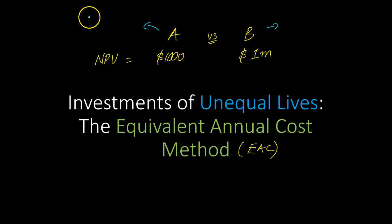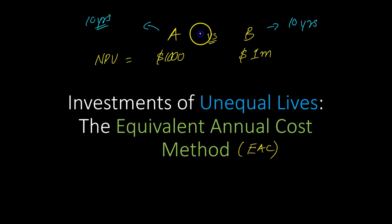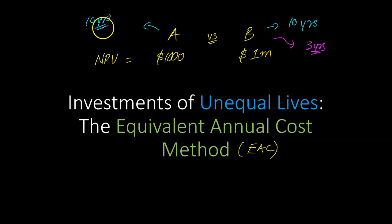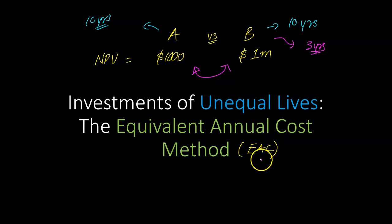In other words, if project A is going to last you for 10 years, then project B is also going to last you for 10 years. It turns out that if the two projects have unequal lives — for example, if project B is only going to last you for three years whereas project A lasts ten years — you cannot directly compare NPVs in this fashion. That is where the equivalent annual cost method comes in handy. It allows you to compare projects that have unequal lives.